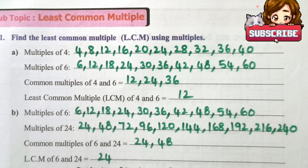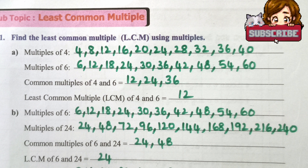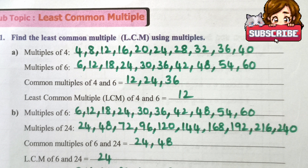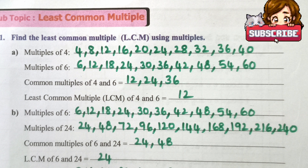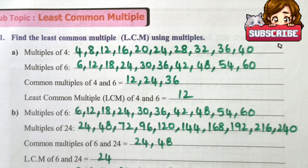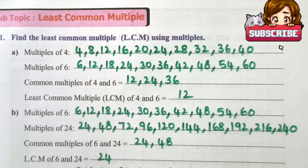Multiples of 6: 6, 12, 18, 24, 30, 36, 42, 48, 54, 60. Common multiples of 4 and 6: 12, 24, 36. Least common multiple of 4 and 6 is 12.